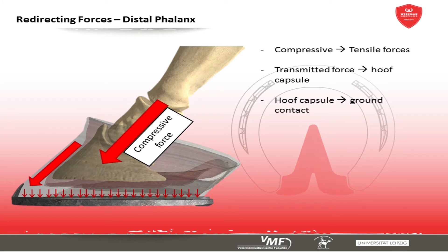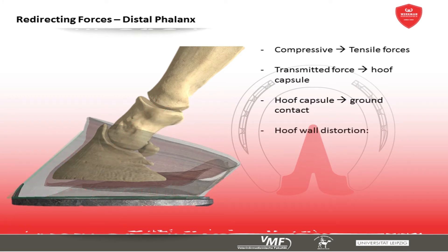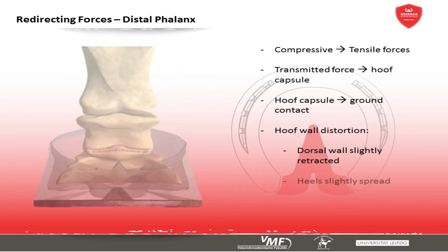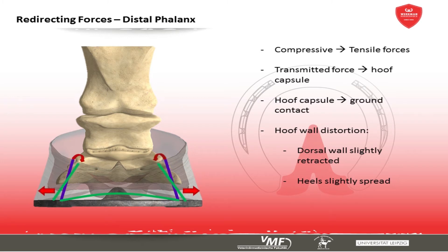The transmitted forces will cause a certain distortion of the hoof wall, which is difficult to assess with the bare eye. As demonstrated by the colored lines, the proximal portion of the dorsal wall will be slightly retracted. On the other hand, the heels are slightly spread and the sole concavity is flattened.